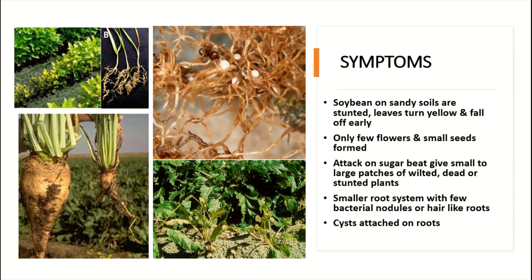Here you can see the symptoms of cyst nematodes. In soybean on sandy soils, soybean plants are stunted, leaves turn yellow and fall off early. Only a few flowers and small seeds are formed in case of attack by these nematodes.